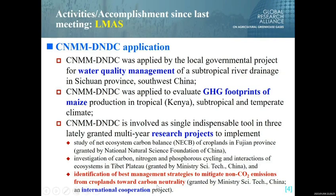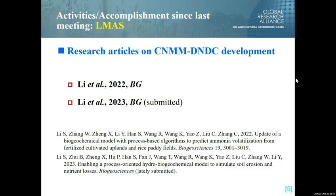The last project is an international cooperation research project granted by the Ministry of Science and Technology of China and Canada. For model development and validation in the last year, we have published one paper in Biogeosciences on ammonia volatilization from croplands, including uplands and paddy rice fields. We also submitted one paper to a journal on the simulation of soil erosion and nutrient losses.